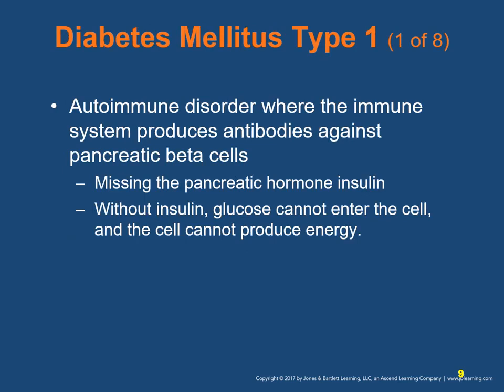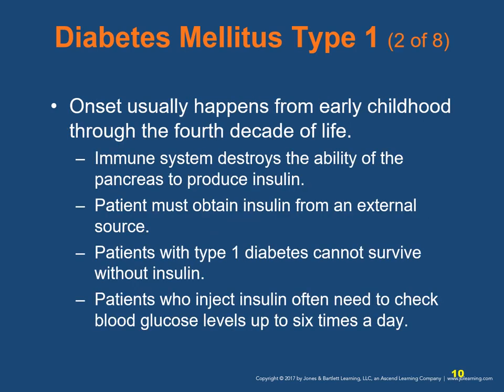Diabetes mellitus type 1 is an autoimmune disorder in which the immune system produces antibodies against the pancreatic beta cells, resulting in a lack of insulin. Without insulin, glucose cannot enter the cell and the cell cannot produce energy. The onset usually happens from early childhood through the fourth decade of life. The immune system destroys the pancreas's ability to produce insulin, so the patient must obtain insulin from an external source. Patients with type 1 diabetes cannot survive without insulin.